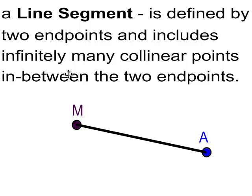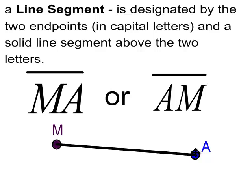A line segment: similar rules in notation compared to a line. You're going to use two capital letters to designate the endpoints. A line segment represents infinitely many points between those two endpoints. And so, the notation is going to be put a solid line segment here above it, the two letters, and put the endpoints: M, A, or A, M. Done.